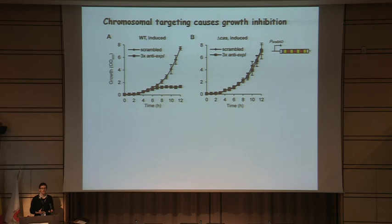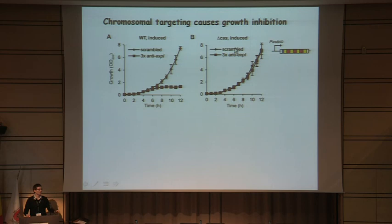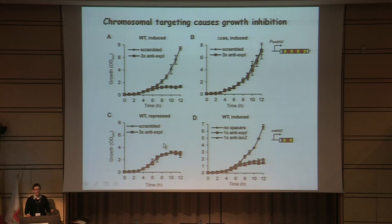We then used these systems in a more controllable way: we introduced them under repressed conditions, then turned on expression and looked at bacterial growth. When we induce expression of chromosomal targeting spacers, we get a cessation of growth compared to scrambled controls, and in the CAS mutant background that inhibition is abolished. When we repress expression of the RNAs from these plasmids, there is no difference in growth between scrambled and chromosomal targeting plasmids — showing it is expression of the arrays, not the plasmid itself, that matters.